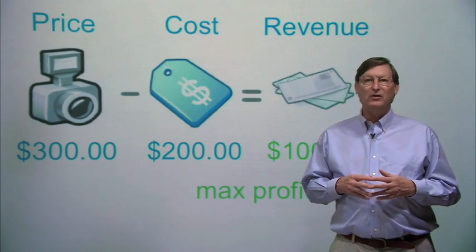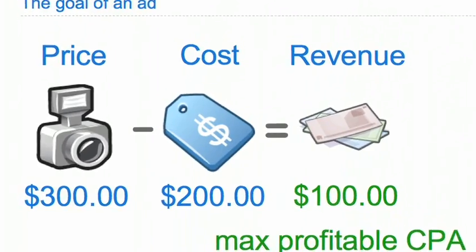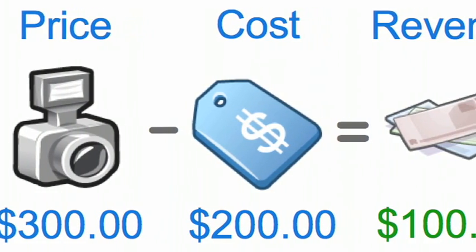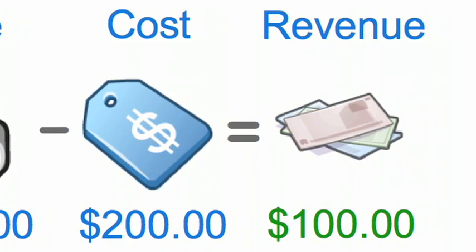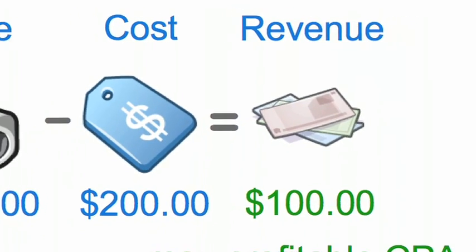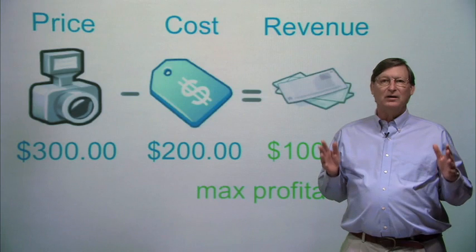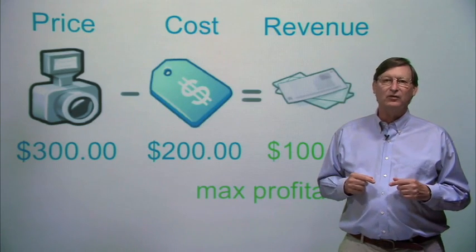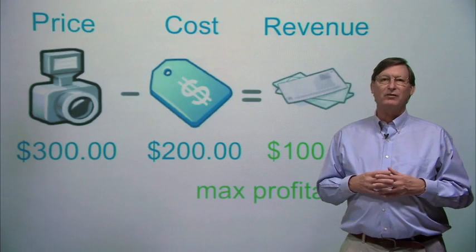For example, you may sell a digital camera on your site for $300. Let's assume that each camera has an additional wholesale cost of $200 to you. Therefore, a conversion for a user who buys a camera on your site generates $100 worth of revenue for you — the price a user paid, $300, less the cost to you, $200. That $100 revenue is your maximum profitable cost per acquisition, or CPA. You can pay up to $100 for each conversion and still make a profit on the sale.